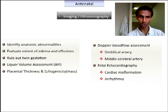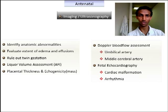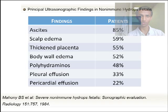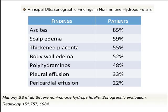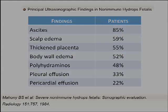In cases of immune hydrops fetalis with fetal anemia, there will be increased peak systolic velocity in the middle cerebral artery, so Doppler study of the MCA is warranted. Ultrasonography is also used for fetal echocardiography. Particular findings seen on ultrasound in a fetus with hydrops fetalis include ascites and generalized body edema.